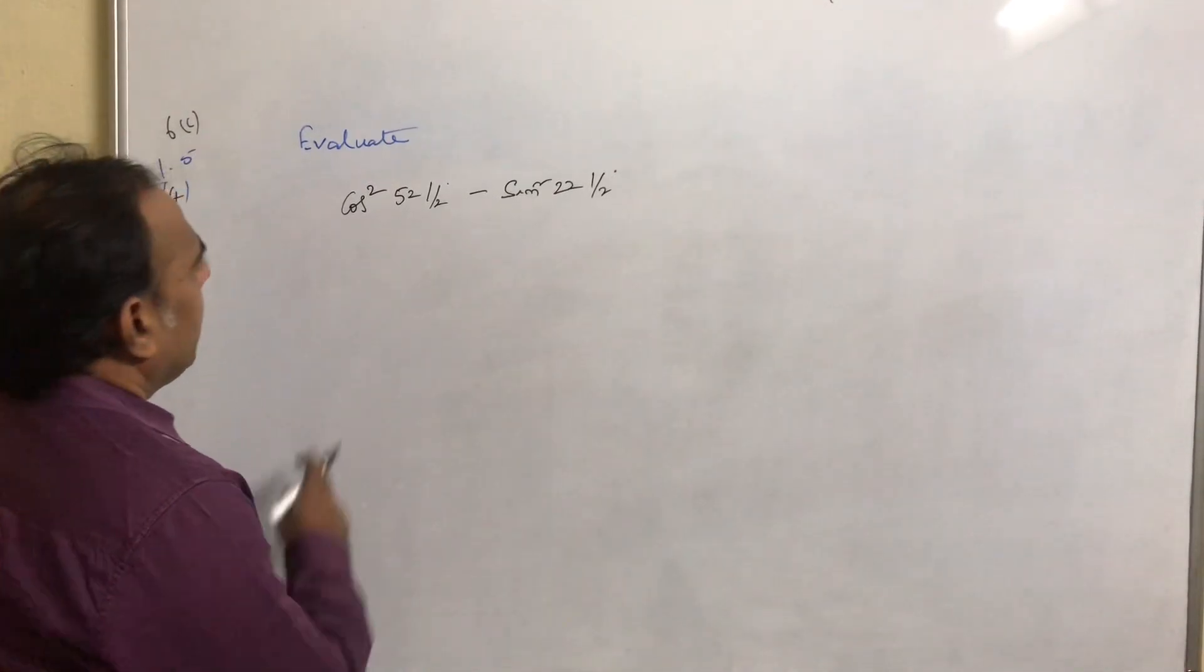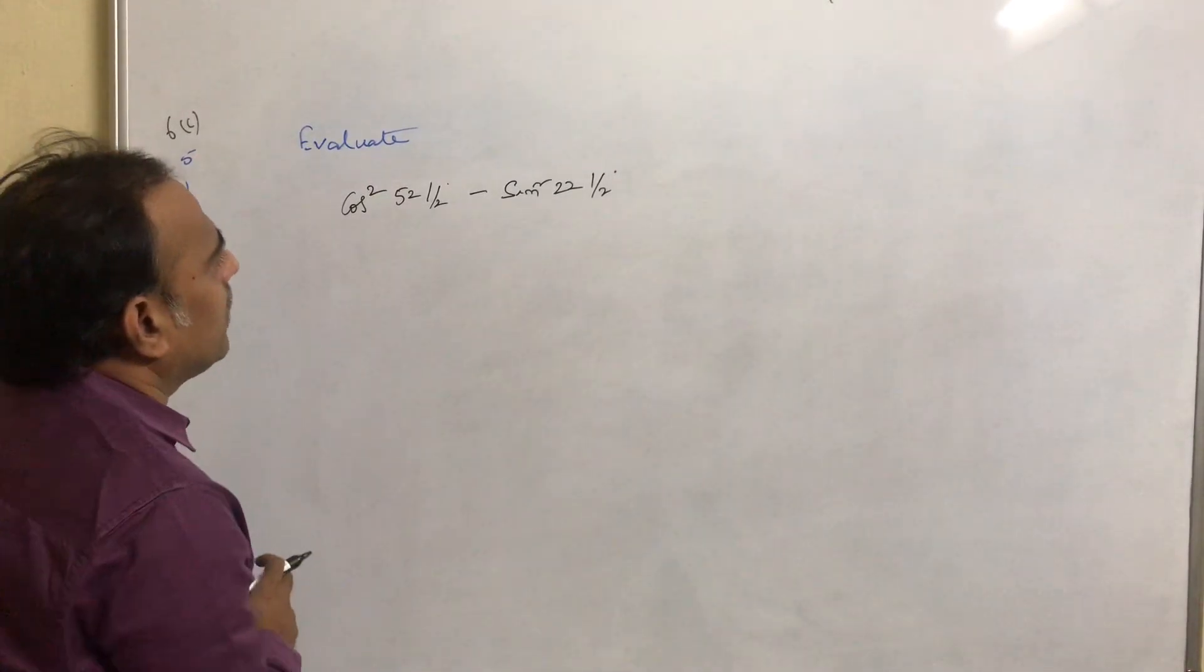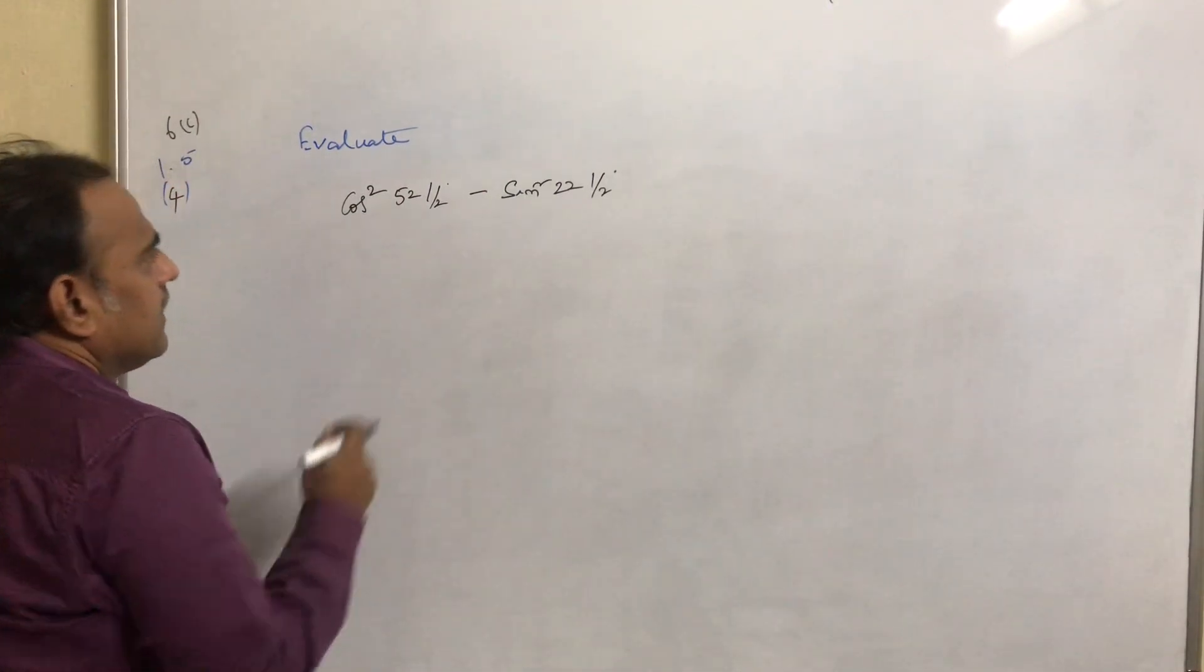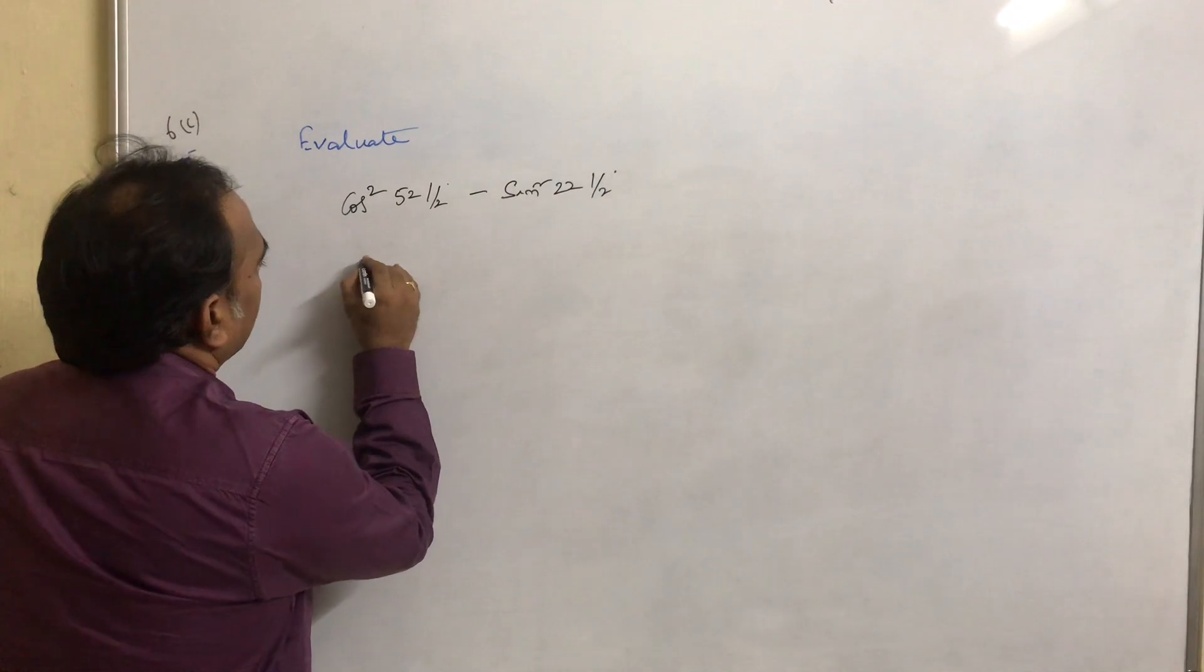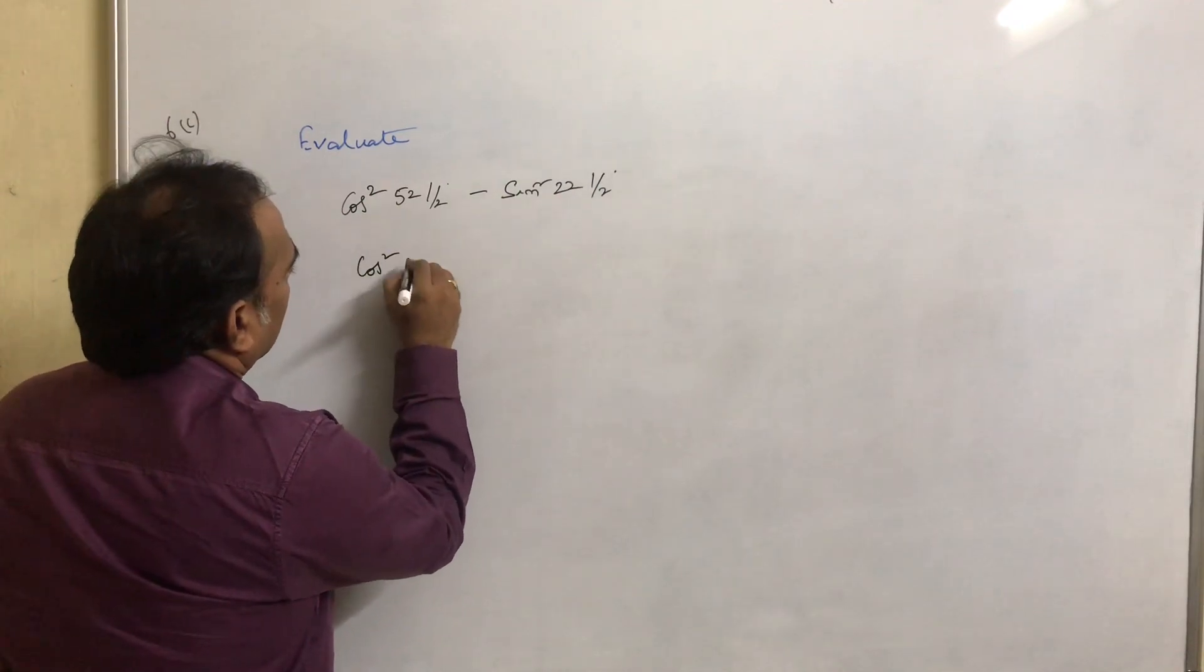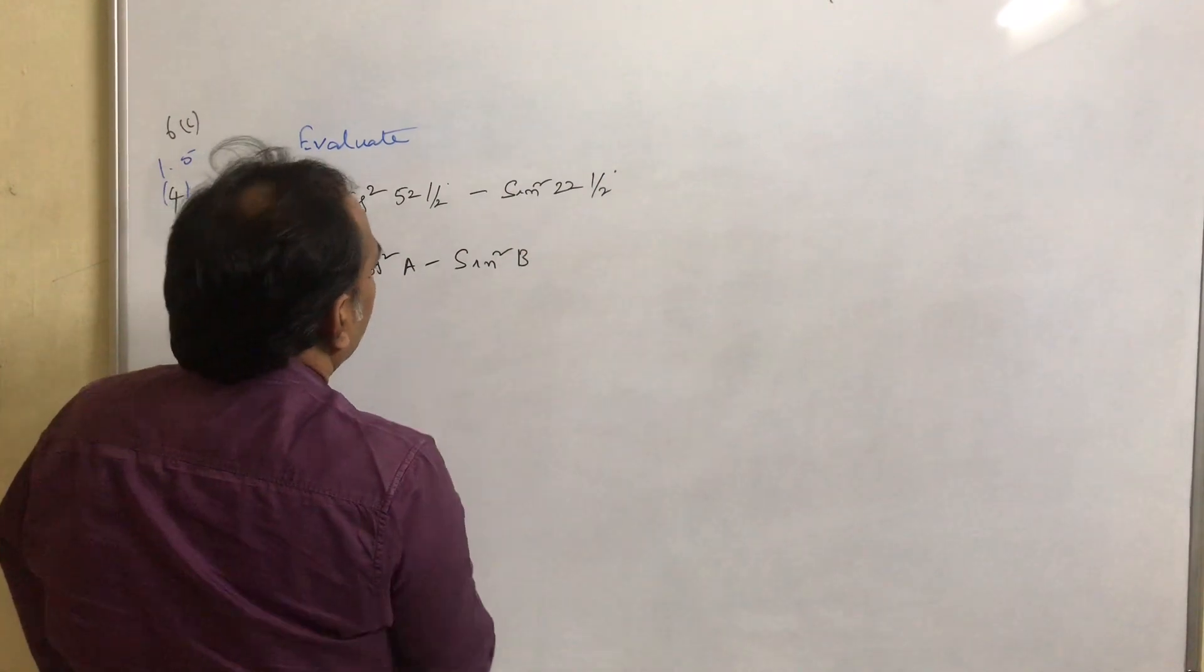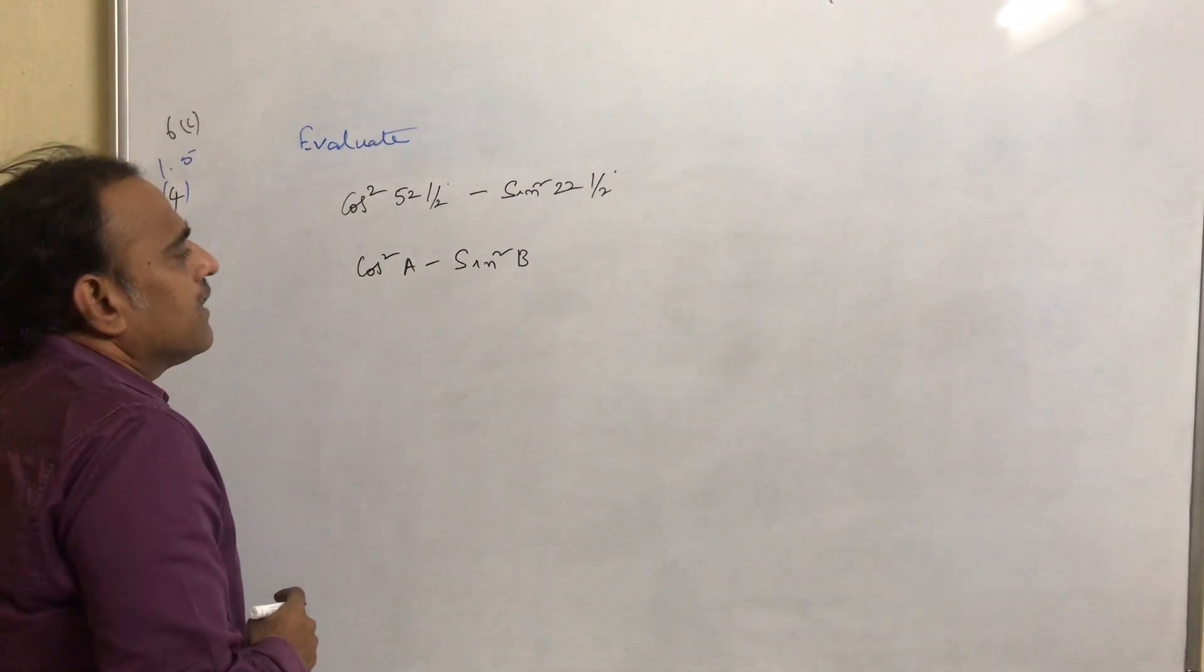Our next problem is evaluate cos²(52½°) - sin²(22½°). Again, this is in which format? cos²a - sin²b. What is the formula for cos²a - sin²b?